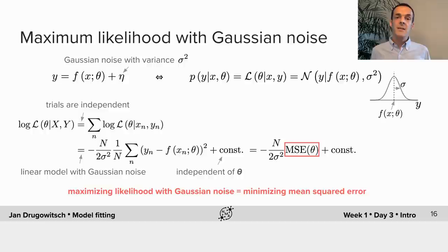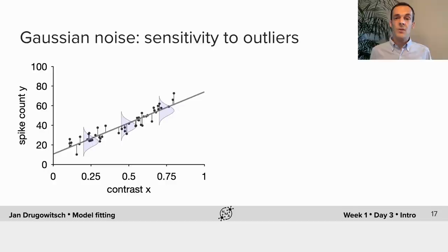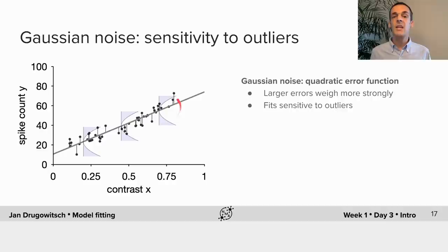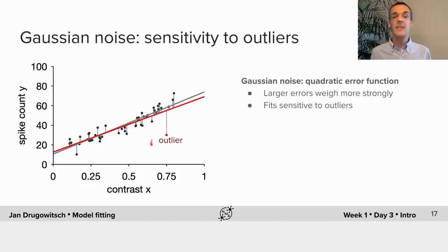What we've encountered here is a particular example of a general duality between maximizing likelihoods and minimizing errors. In general, maximizing likelihoods can always be interpreted as minimizing some error function, where the way that error is measured depends on the assumptions we make about the form of the noise and the likelihood. For Gaussian noise, this error becomes the squared error. One thing to keep in mind when assuming Gaussian noise is that it makes the model fit sensitive to outliers: since we measure error by the square of the distance, data points further away from model predictions more strongly influence the fit. So if we have an outlier, shown here in red, it will strongly influence the model fits, as you can see by comparing the resulting model in red with the one without the outlier in gray.